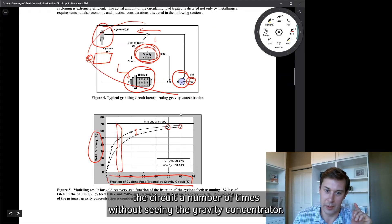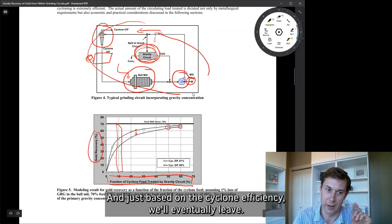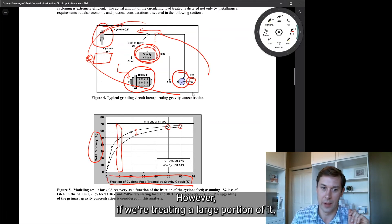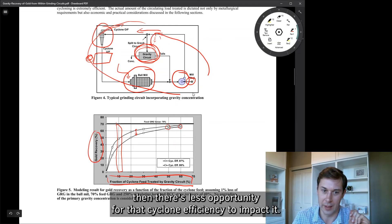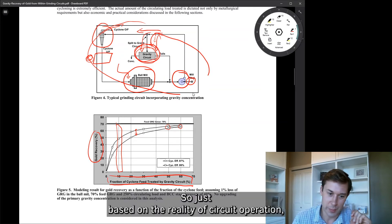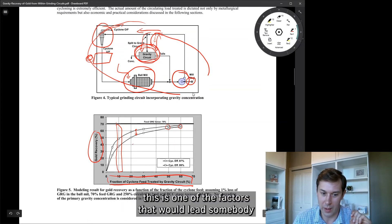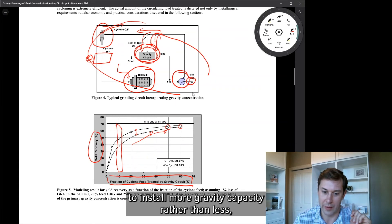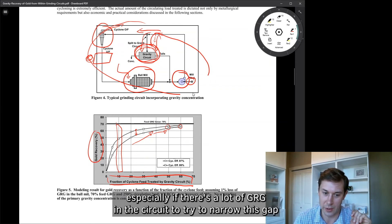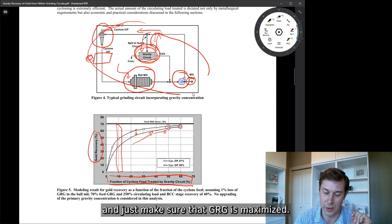And just based on the cyclone efficiency, it will eventually leave. However, if we're treating a large portion of it, then there's less opportunity for that cyclone efficiency to impact it. So just based on the reality of circuit operation, this is one of the factors that would lead somebody to install more gravity capacity rather than less, especially if there's a lot of GRG in the circuit to try to narrow this gap and just make sure that GRG is maximized.